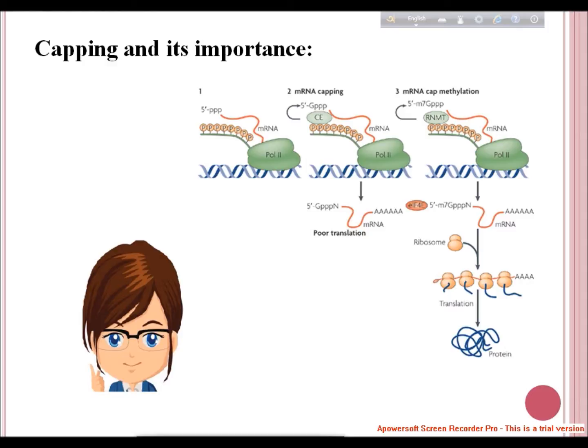Capped mRNAs are less susceptible to exonuclease degradation during microinjection experiments compared to uncapped mRNAs. However, it should be noted that the unmethylated cap analog shows no significant differences in its translation properties compared to the mono-methylated cap analog. In Ascaris lumbricoides, transcription of the spliced leader RNA was catalyzed by RNA polymerase II, and the majority of spliced leader RNA synthesized in vitro processed a trimethylguanosine cap structure identical to that found in vivo.